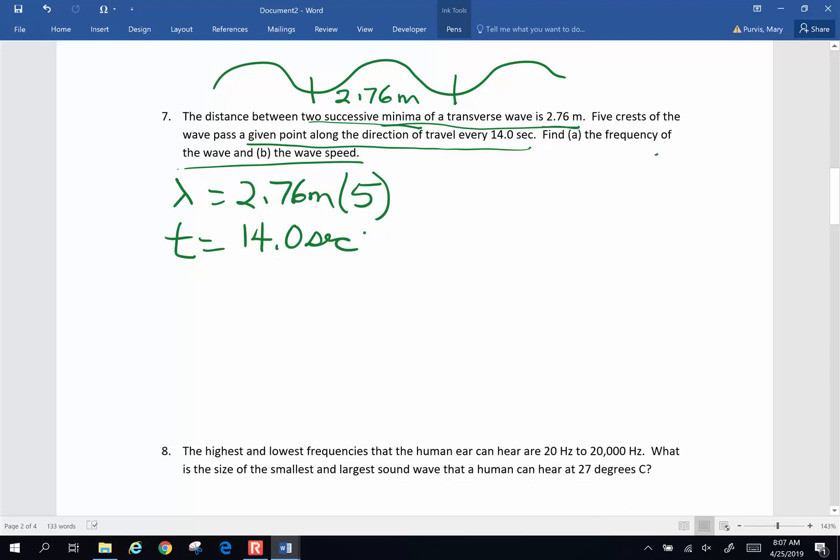What is the frequency of the wave and what is the wave speed? So frequency is going to be number of waves that are going to pass per unit of time. So I'm going to have five waves that pass in 14 seconds. So frequency is number of waves divided by time. Five divided by 14, when I grab my calculator, is 0.357 hertz. That's my frequency for part A.